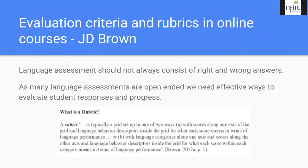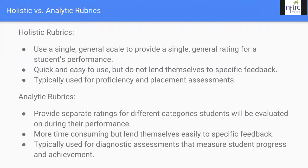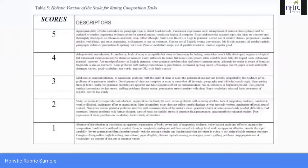There's a difference between holistic rubrics and analytic rubrics. Holistic rubrics use a single general scale that provides a single general rating for student performance — students see one score, and descriptors are fairly general. The evaluator places the student into one of five categories. We're giving an overall snapshot of where the student is placing, not breaking down into nitty-gritty elements of the tasks.